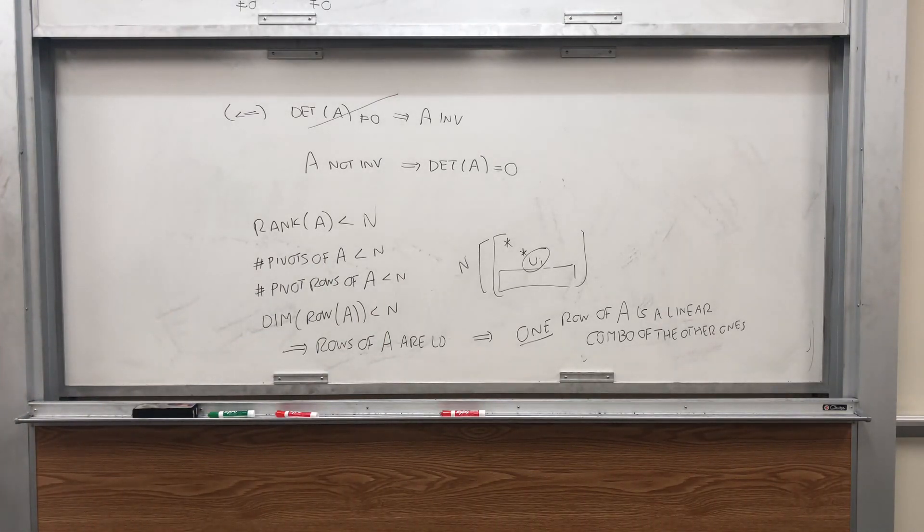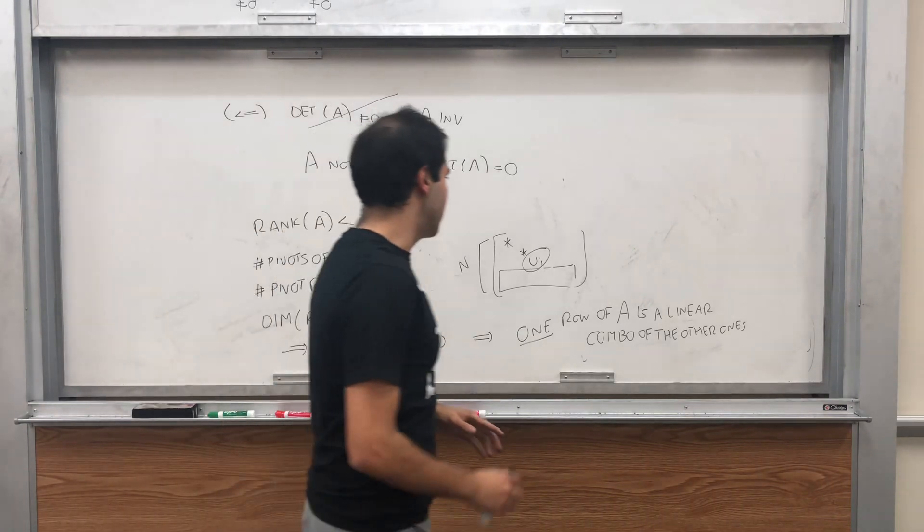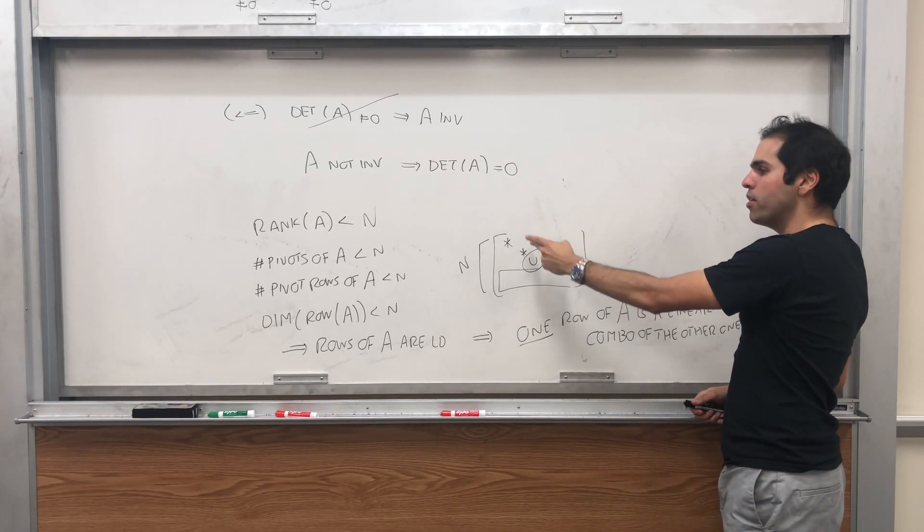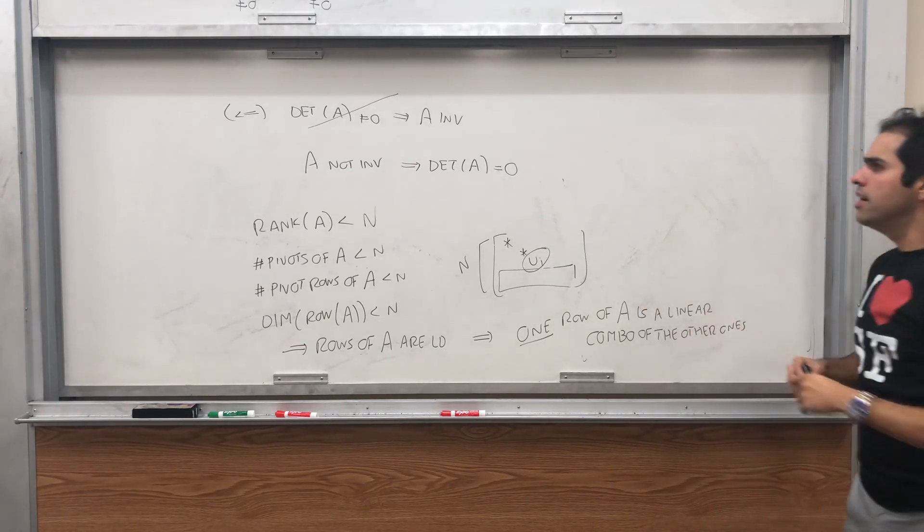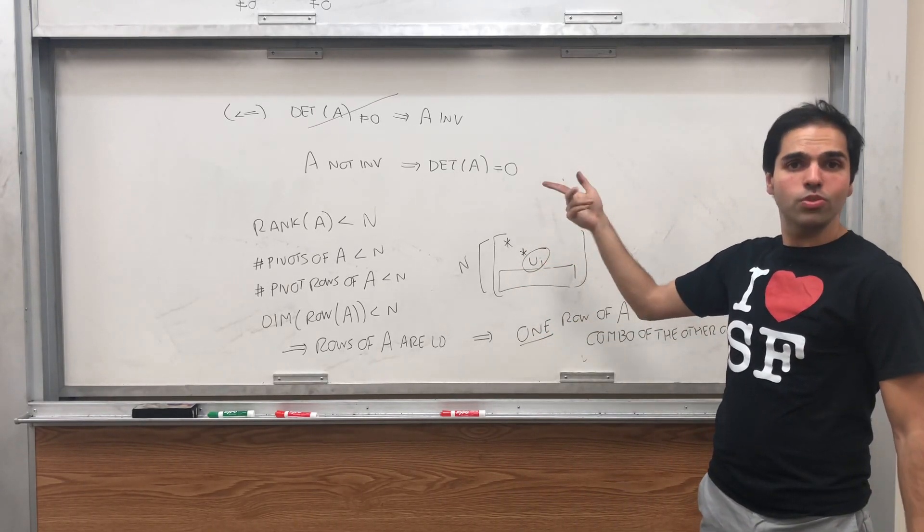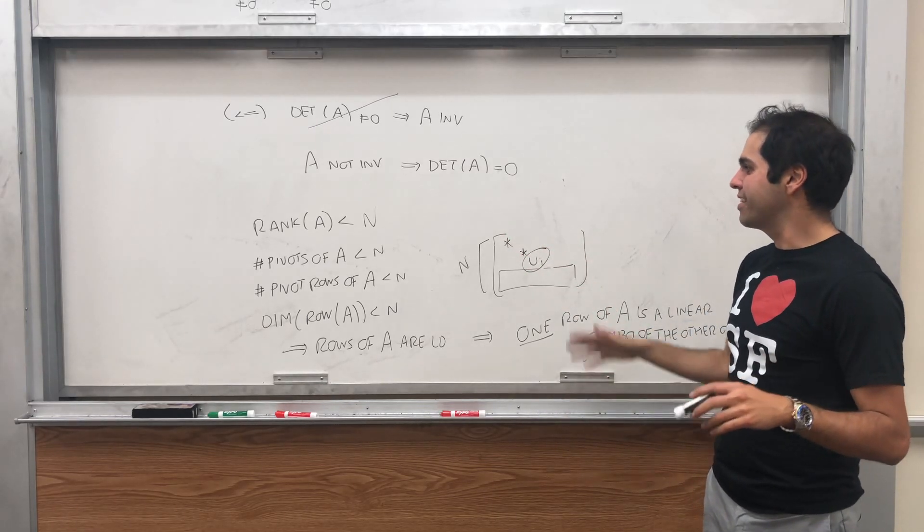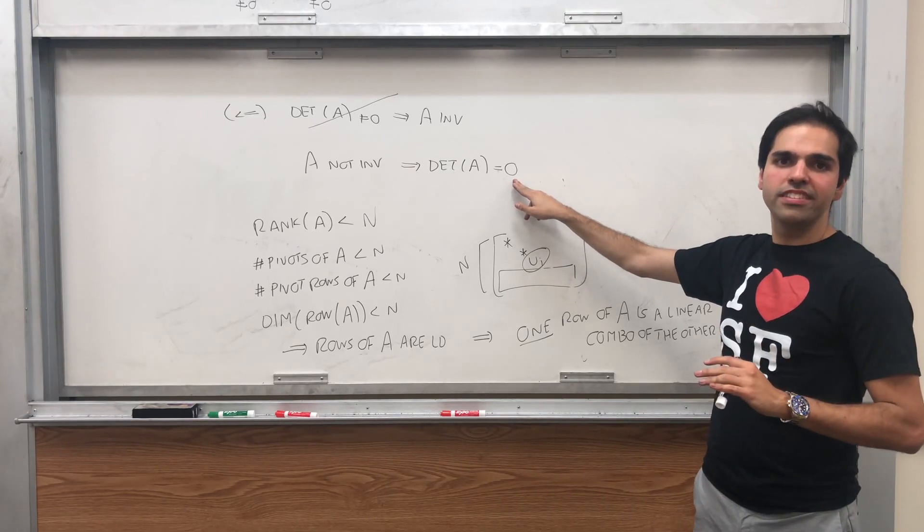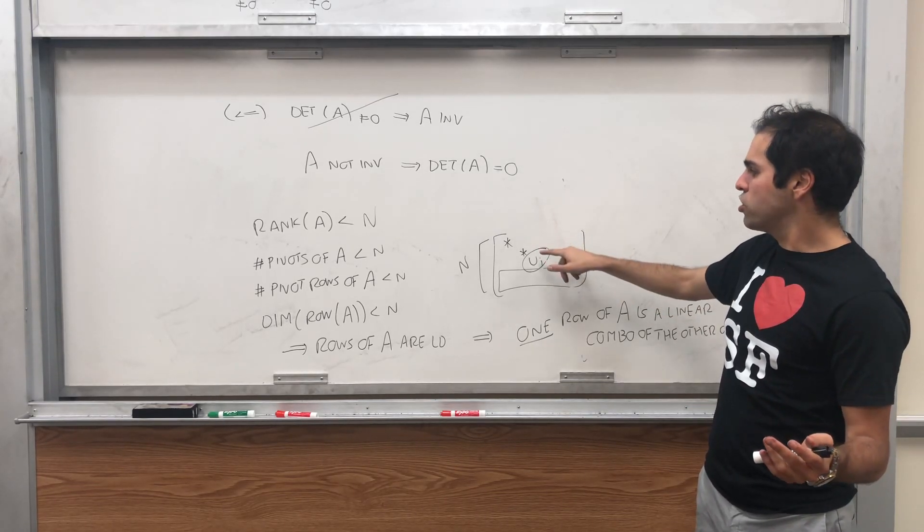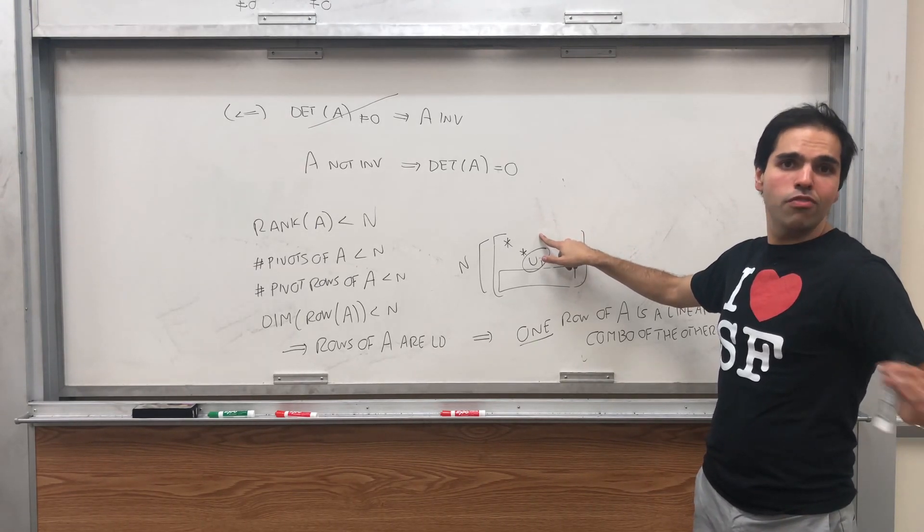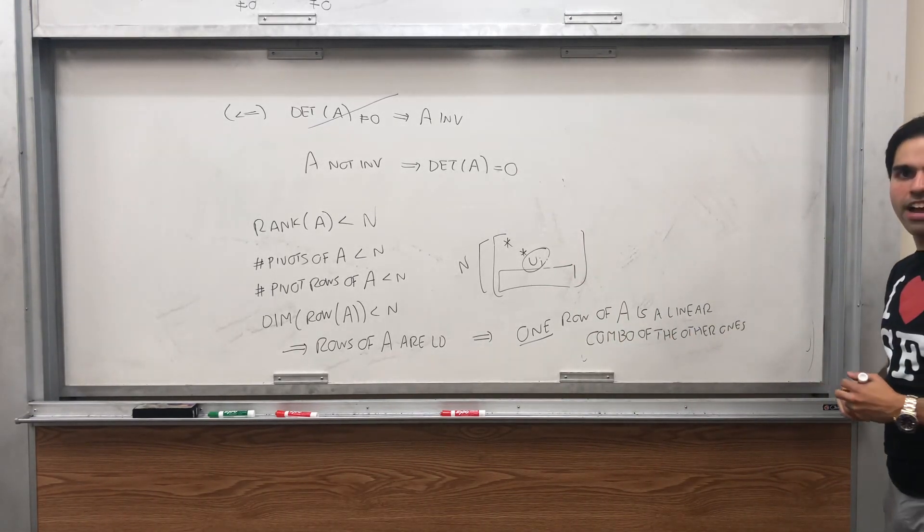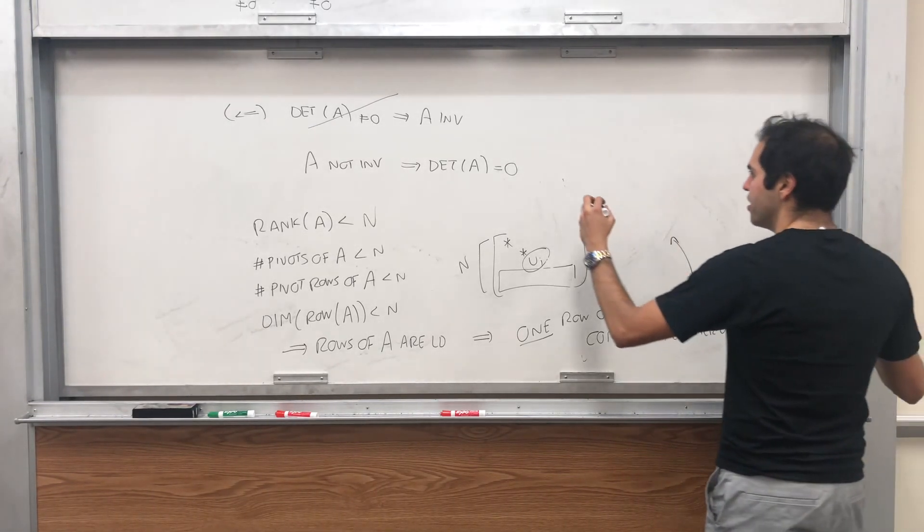But remember what we're trying to show. We want to show that the determinant of A is 0. Now if this is like the suspicious row, we can always interchange the rows and put this at the top. Now of course, it might affect the determinant, because whenever you interchange, the determinant switches sides. So it definitely affects the determinant. But it does not affect whether it's 0 or not. So what I'm saying is, if this is in row 3, for example, just switch bunch of rows and put this on the top row. The question of whether it's 0 or not is unaffected by this.